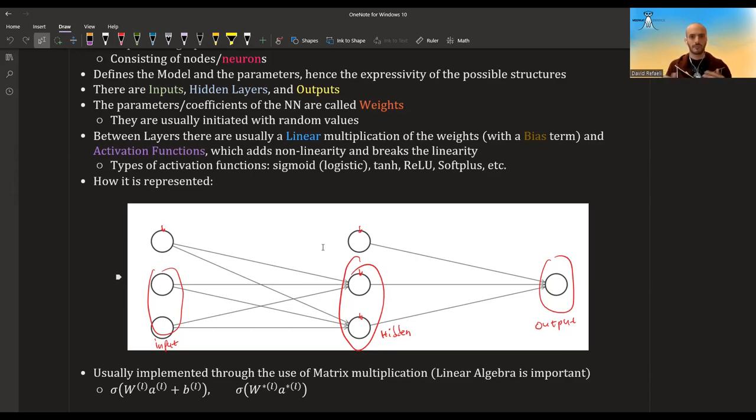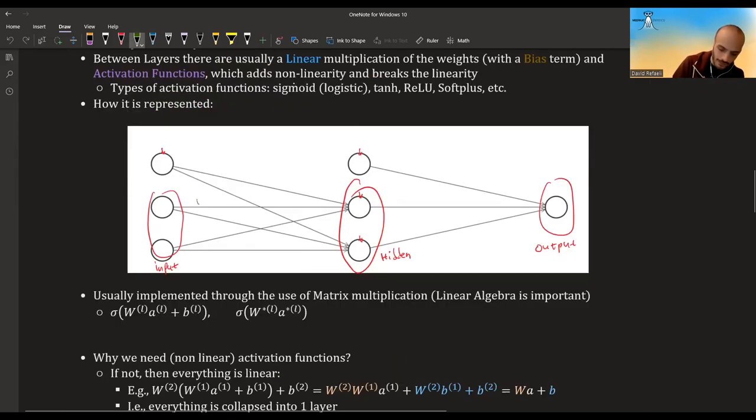The parameters or coefficients of this model - in the context of neural networks they are called weights. They are usually also initiated with random values. Between each layer, between the input and hidden and between hidden and output, you have these coefficients, these weights. We can give these weights names: w11 of the first layer, w12 of the first layer, w21, w22. So 11 is because it's going from the first input x1 to the first node in the next layer. w12 goes from the first to the second, w21 from the second to the first, etc.